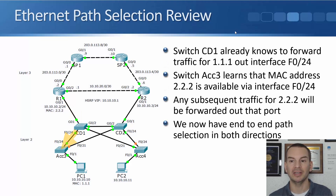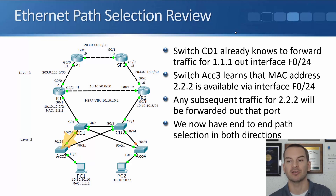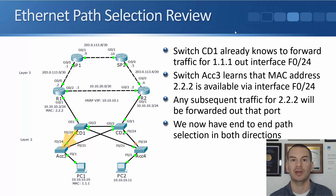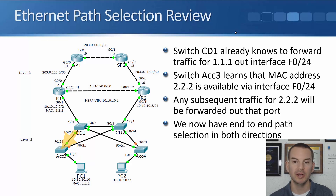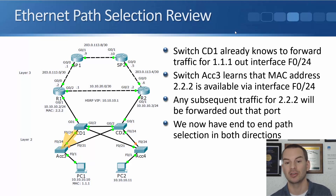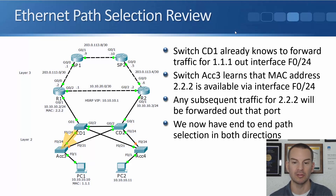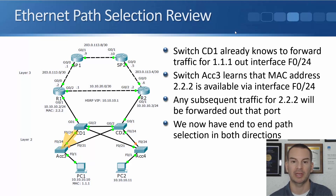R1 responds to the ARP request. CD1 learns that MAC address 2.2.2 on R1 is available via interface Gig0/1. So Switch CD1 now knows the best ports to send traffic out for both R1 and PC1. CD1 forwards the ARP reply for 1.1.1 out towards PC1 on interface Fast0/24. Switch Access 3 learns that MAC address 2.2.2 is available via interface Fast0/24. We now have end-to-end path selection in both directions between PC1 and R1 through Switches Access 3 and CD1.